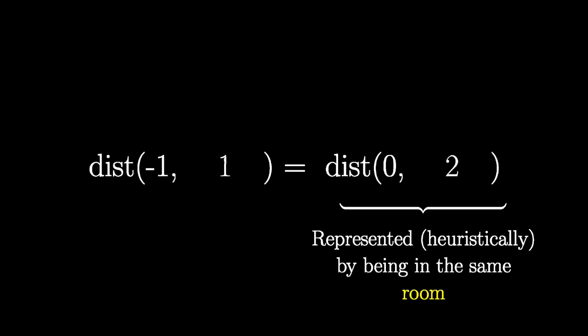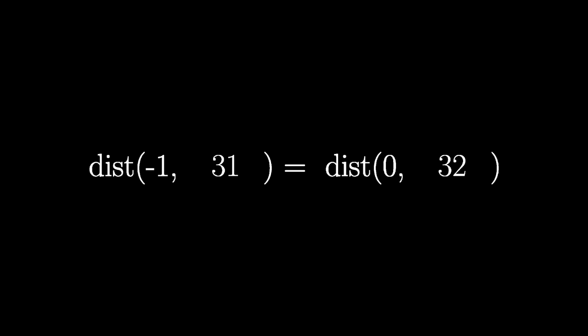You can also deduce where negative numbers must fall. For example, negative one has to be in the same room as one, in the same subroom as three, the same sub-subroom as seven, and so on, always in smaller and smaller rooms with numbers one less than a power of two, because zero is in smaller and smaller rooms with the powers of two.